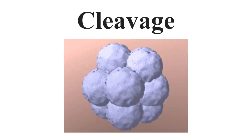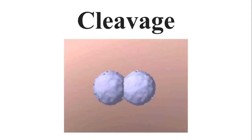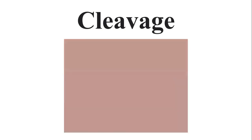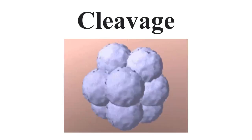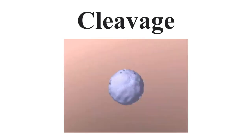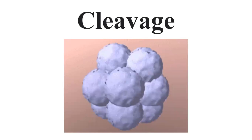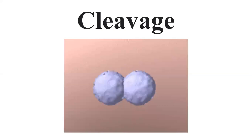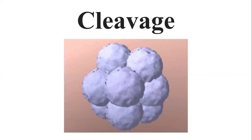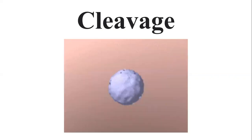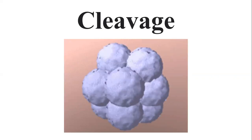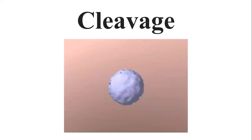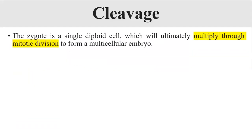Assalamu alaikum dear students, today we will discuss a new topic of developmental biology: cleavage. Cleavage is a process of rapid mitotic division. We have a zygote, which is formed by the fusion of male and female gametes. The zygote is a single cell which must become a multi-cellular new individual, and this division from single cell to multi-cellular is what we call cleavage.